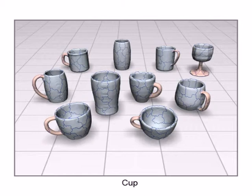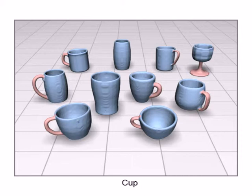We will show more results. This is a set of cup models. Here are their over-segmentations. And here are the co-segmentation results. We can see that our algorithm detects the handles only on those cups that have them.